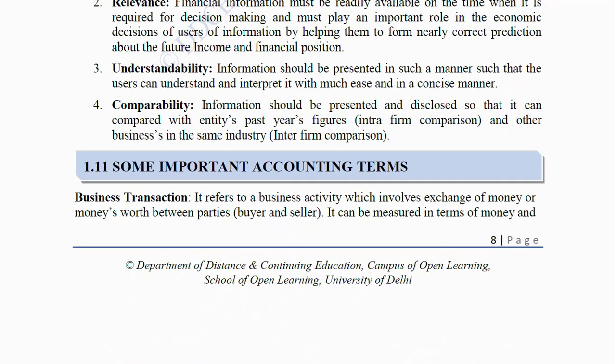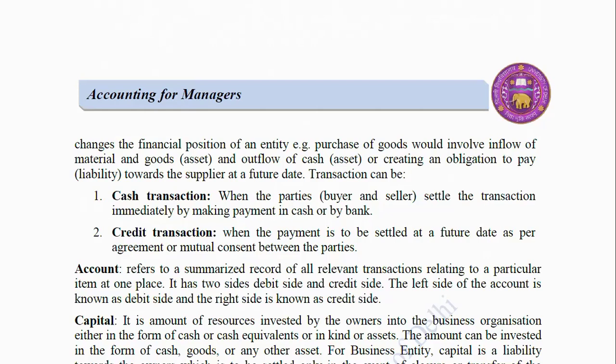Some Important Accounting Terms. Business Transaction: It refers to a business activity which involves exchange of money or money's worth between parties — buyer and seller. It can be measured in terms of money and changes the financial position of an entity. For example, purchase of goods would involve inflow of material and goods (an asset) and outflow of cash (an asset) or creating an obligation to pay (a liability) towards the supplier at a future date.